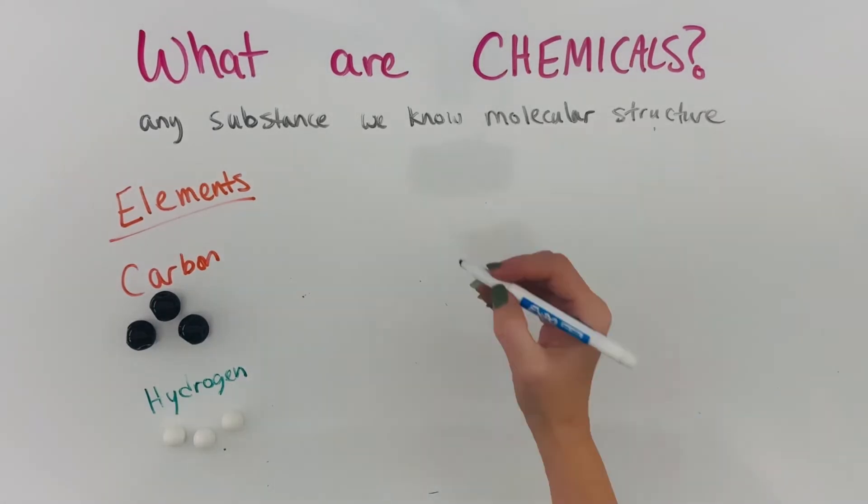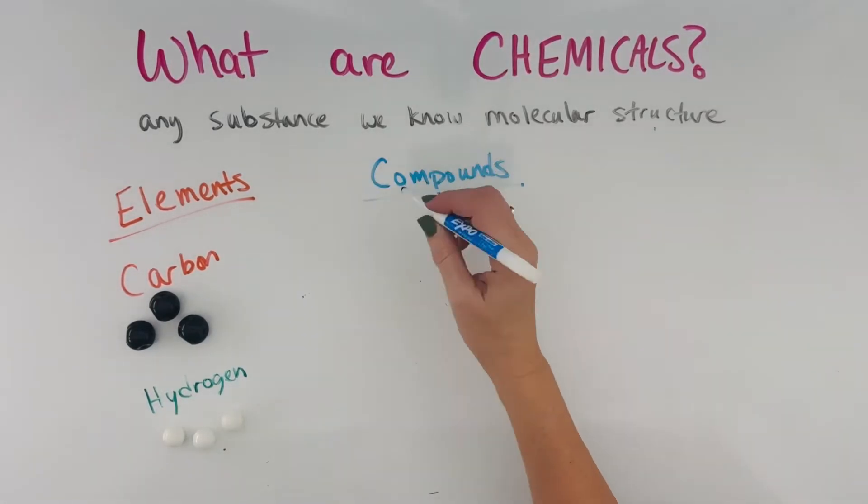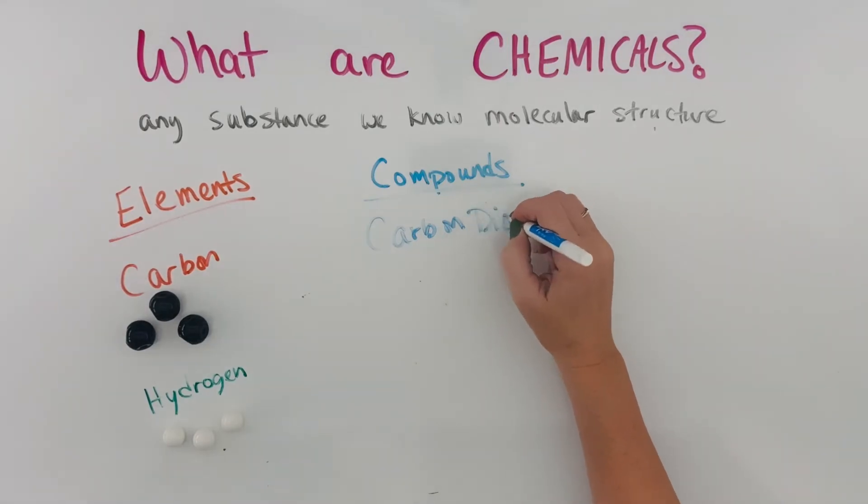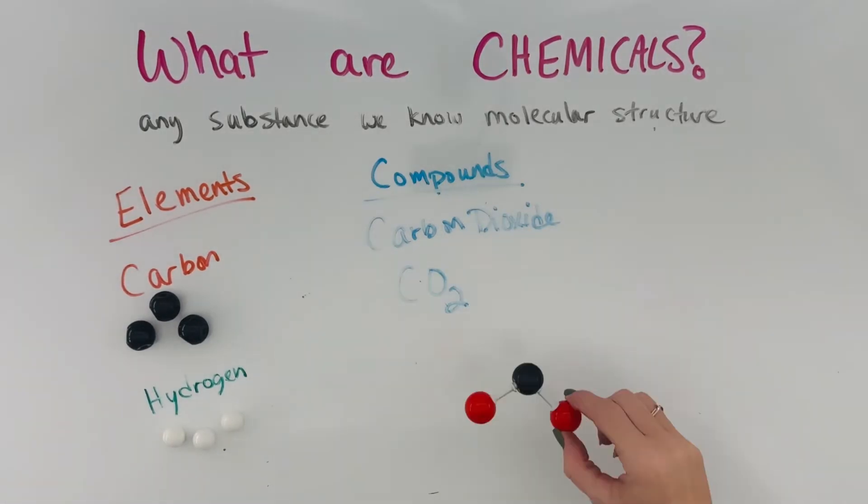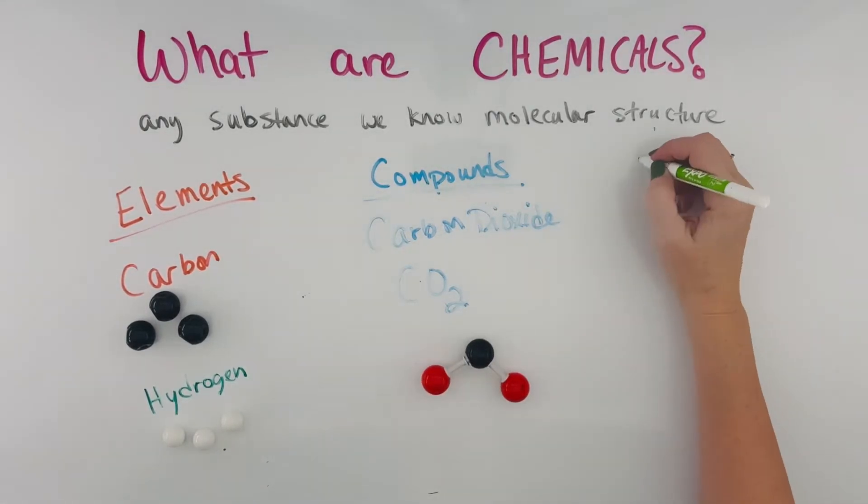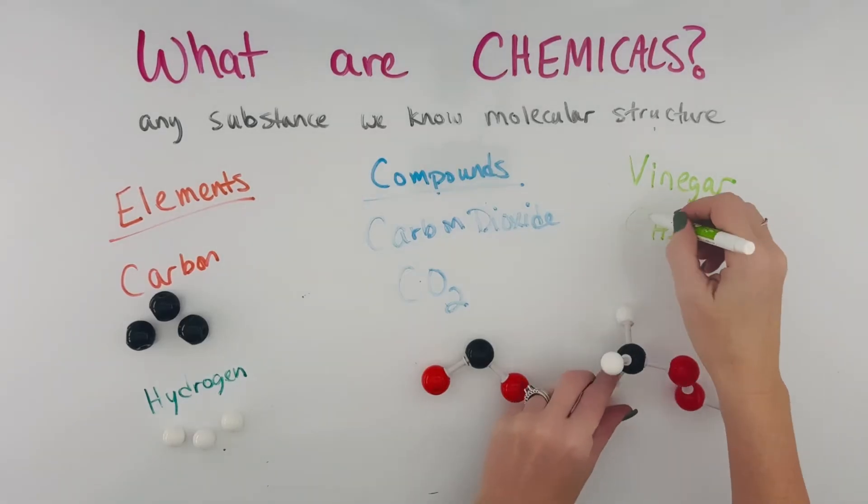The other category of chemicals are compounds. These are substances that we know the molecular structure of, where more than one type of atom are stuck together, like carbon dioxide is always CO2. And vinegar is made of molecules of CH3COOH all stuck together.